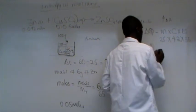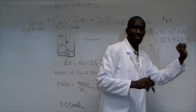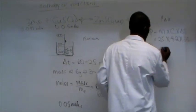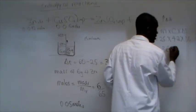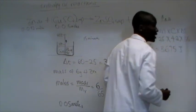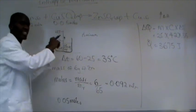So, our Q is going to equal to, if we multiply 25 by 4.2 by 35, what do we get? 3675. And the unit is going to be? Joules. So, this is the heat that was liberated in this reaction.